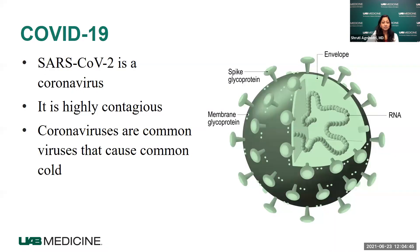COVID-19 is the disease caused by this novel coronavirus called SARS-CoV-2. It's a type of coronavirus, and the coronavirus is a big family of viruses. It's called corona because the shape under the microscope looks like a crown — and crown means corona in Latin. It is a highly contagious disease. There are a lot of different types of coronaviruses that cause common cold, but this one is a little bit different in that it causes many different complications as well.